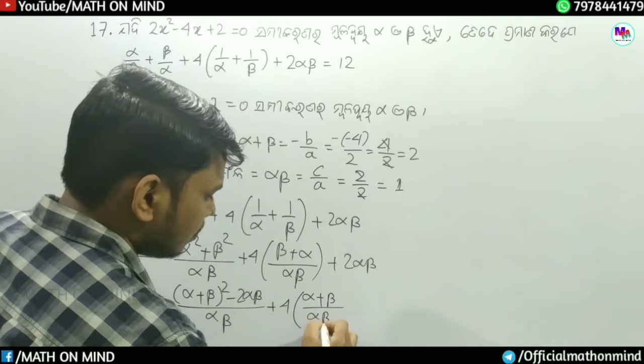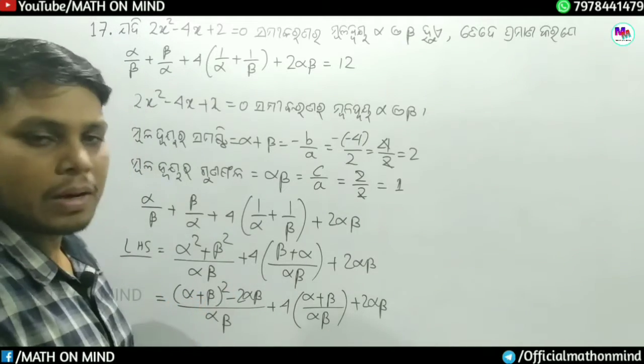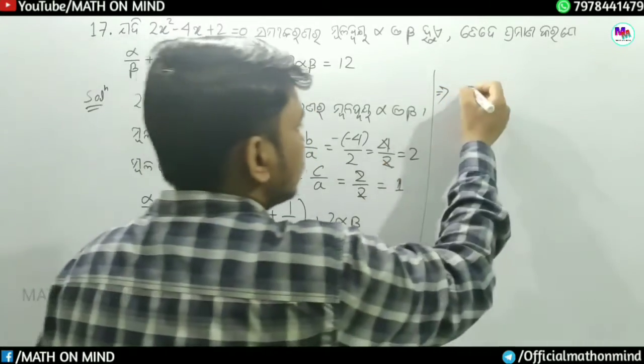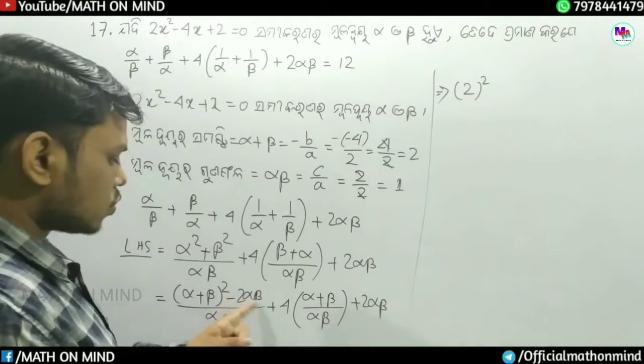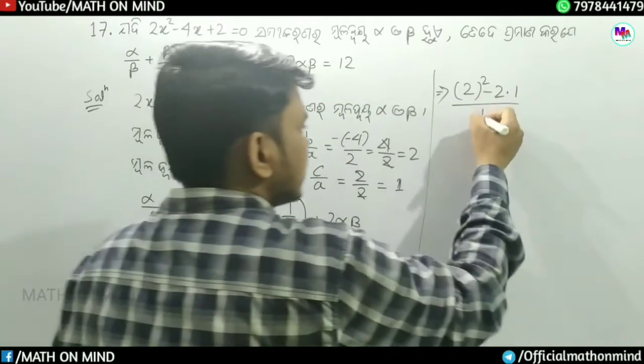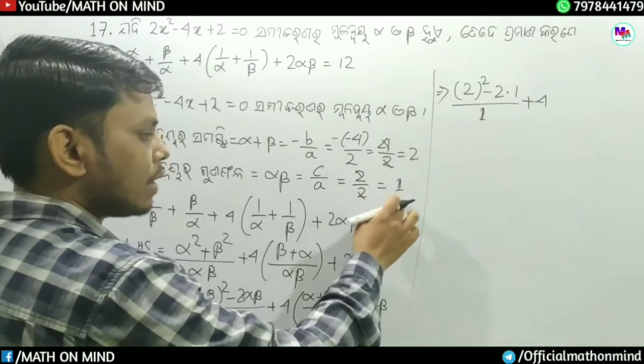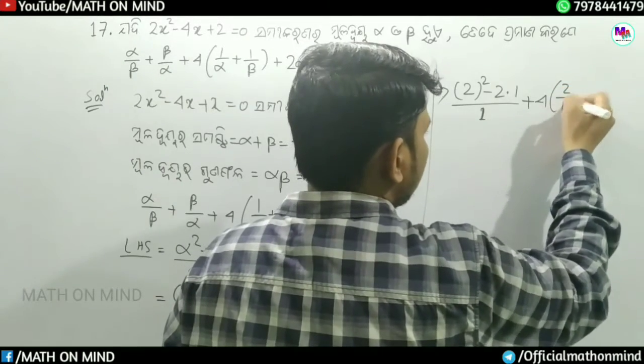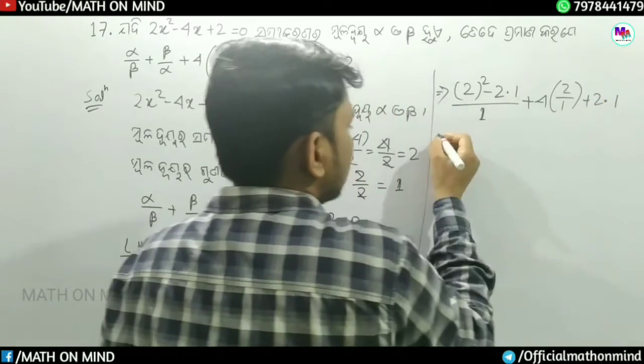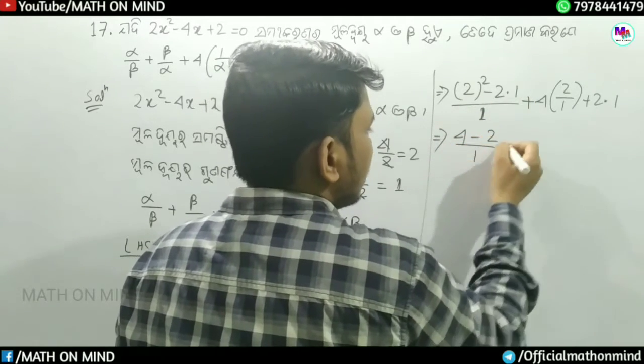Alpha plus beta whole square minus 2 alpha beta. That formula divided by alpha beta plus 4 into alpha plus beta divided by alpha beta. So 2 divided by 1 plus 2 into 2 divided by 1 equals 2 plus 2, which equals 4.